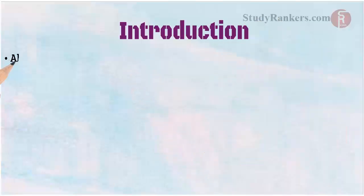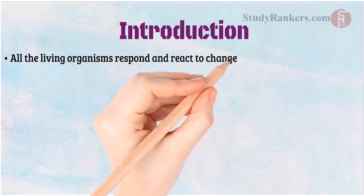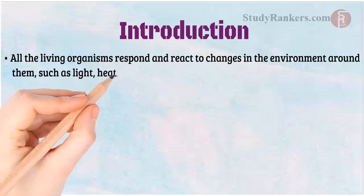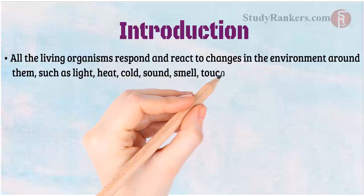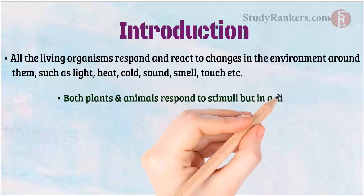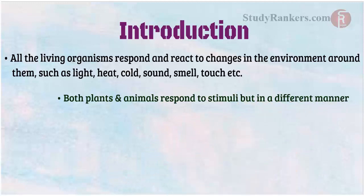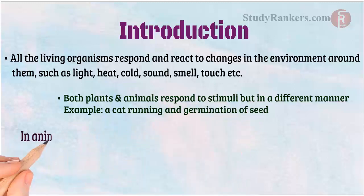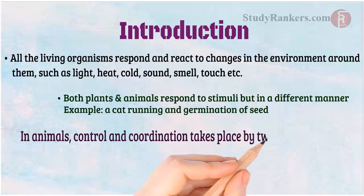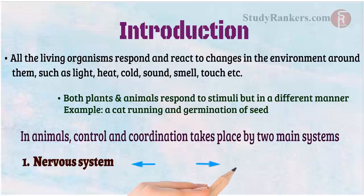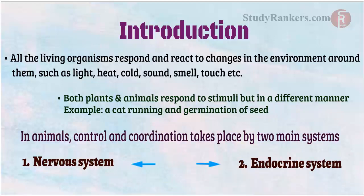Introduction: All living organisms respond and react to changes in the environment around them, such as light, heat, cold, sound, smell, touch, etc. Both plants and animals respond to stimuli, but in a different manner — for example, a cat running and germination of a seed. In animals, control and coordination takes place by two main systems: the nervous system and the endocrine system. Let us study about them in detail.